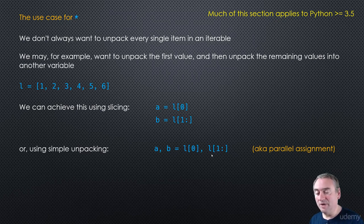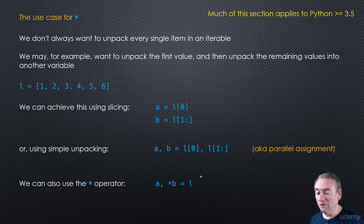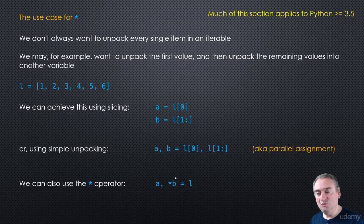We can certainly write it that way, but we can also use the star operator. We can say A, *B = L, and it does exactly the same thing. It's basically saying: take the first element of that iterable, stuff it into A, and then everything else, make it into a list and put it into B.